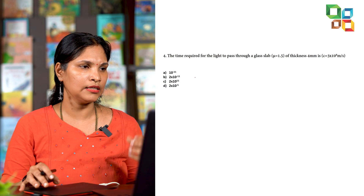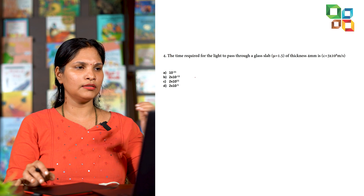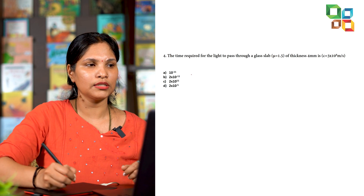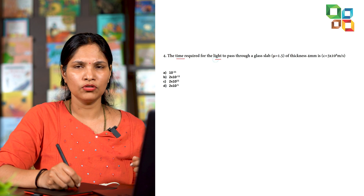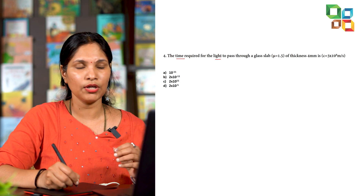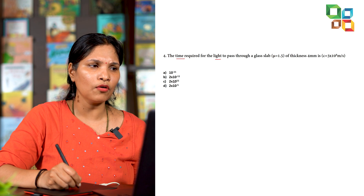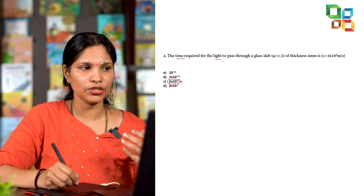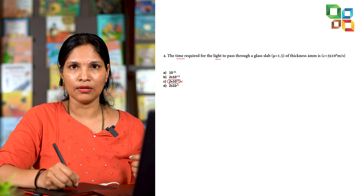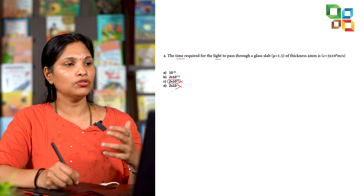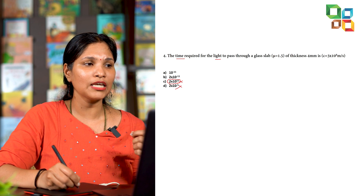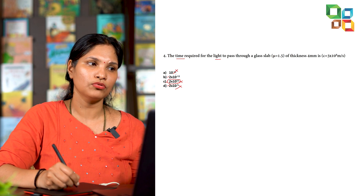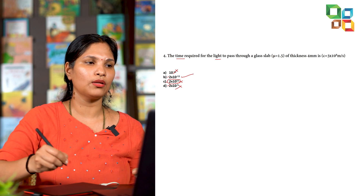In KCT, you can also exploit patterns in the options. For a question about the time period of light: light travels very fast, so 2 × 10¹¹ seconds is too large — discard it. The number 11 appears in three remaining options, so the answer is likely related to 11, eliminating the one without it. Among the first and second options, 2 appears three times, pointing to option B: 2 × 10⁻¹¹.